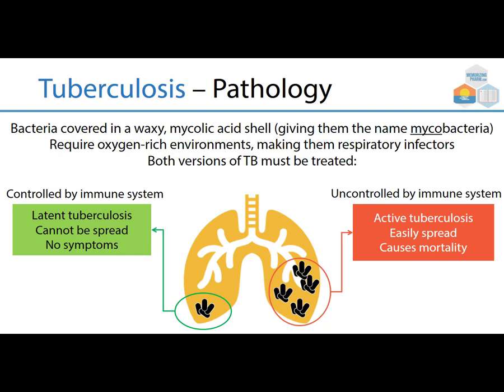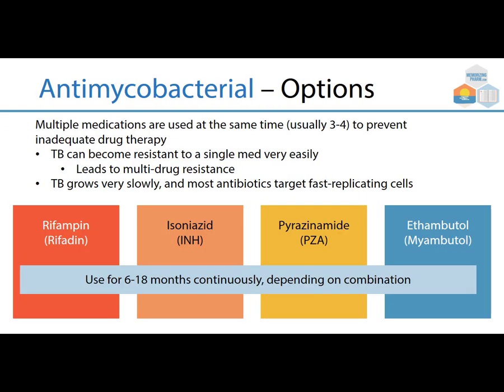Both versions of TB must be treated. Latent tuberculosis is controlled by the immune system — it can't be spread and has no symptoms. Active tuberculosis is uncontrolled by the immune system, easily spread, and causes mortality. Multiple medications are used at the same time, usually three to four, to prevent inadequate drug therapy. TB can become resistant to a single medication very easily, which leads to multidrug resistance.